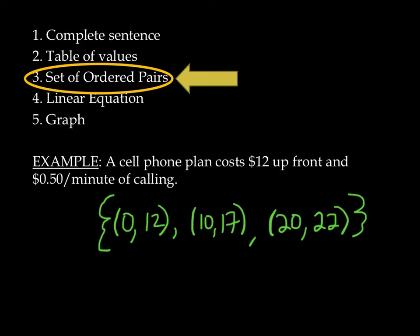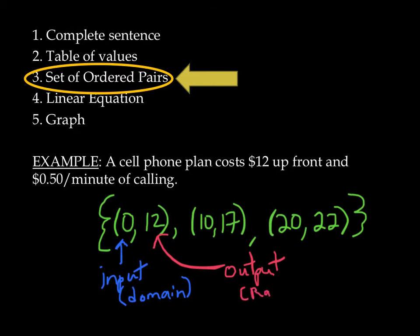Each pair includes one value, which is your input value. That comes from the domain. And every pair also has an output value, which comes out of your range of the function. So for this linear function, the number of minutes is followed by the cost.